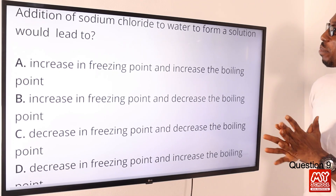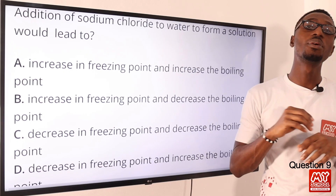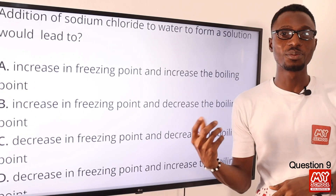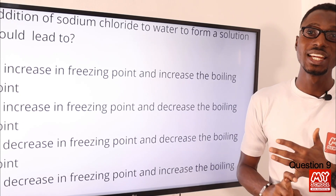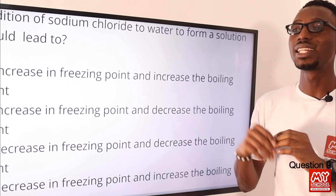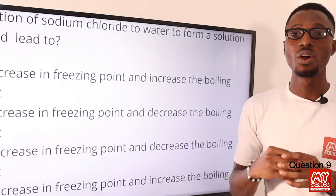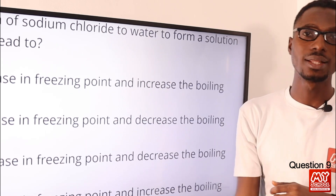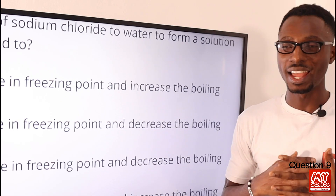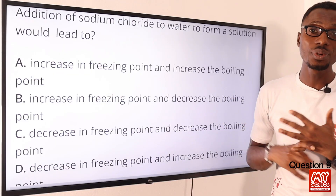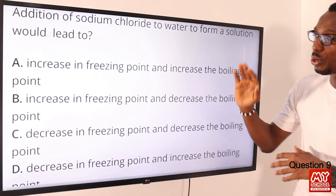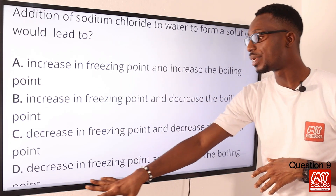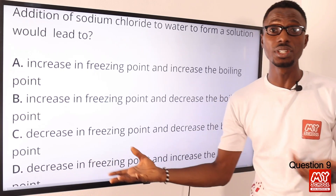Question nine: addition of sodium chloride to water to form a solution will lead to what? Sodium chloride is your common salt. When you add common salt to water, it is going to cause a decrease in the freezing point and an increase in the boiling point. When you add an impurity to water, the boiling point increases. The correct compilation — decrease in freezing point and increase in boiling point — is in option D. Option D is the right option.